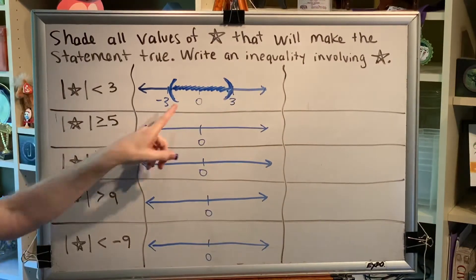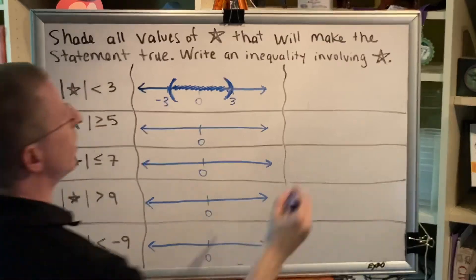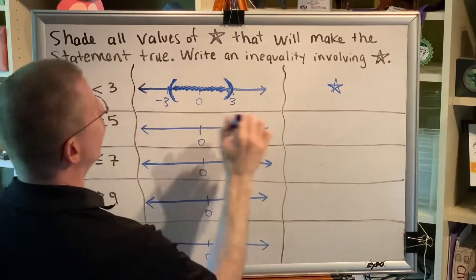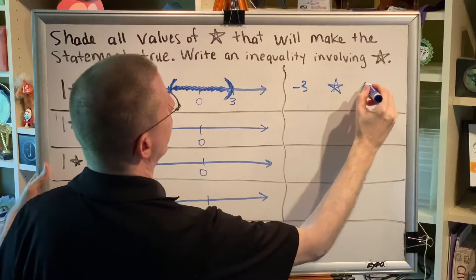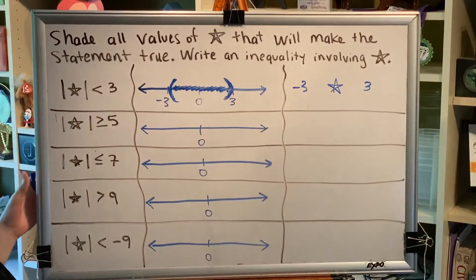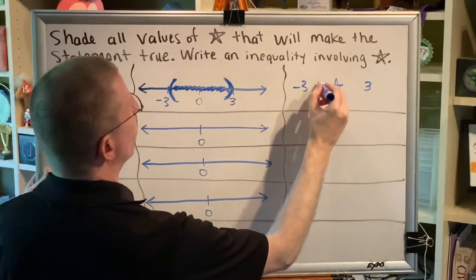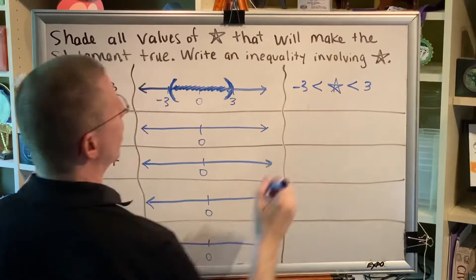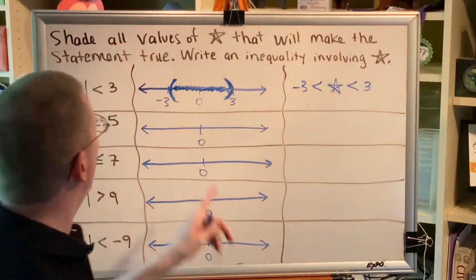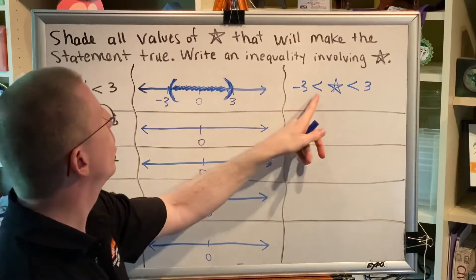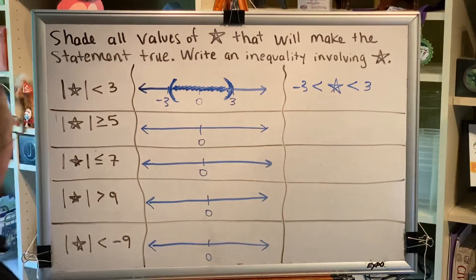Now, this is a between type inequality, which means that star has to be in between negative 3 and positive 3. And we've learned by studying these kinds of inequalities that the symbol in the middle always has to be less than or less than or equal to. And because we have parentheses in both places, both of these will be less than.